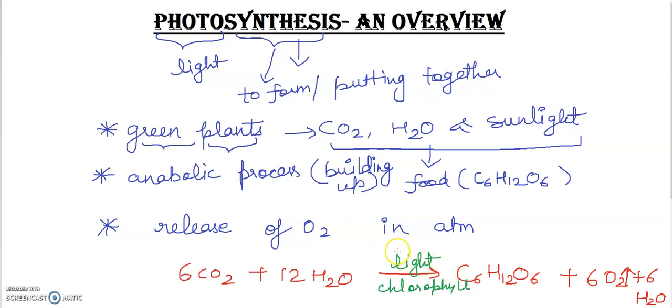This equation is well balanced. From the above equation you can summarize that the raw materials for photosynthesis are CO2 and water, along with light and chlorophyll. CO2 is absorbed from the air and water is absorbed from the soil. Energy is needed for the chemical reactions.